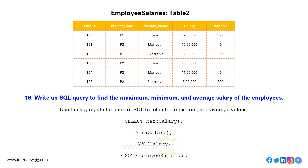Write an SQL query to find the maximum, minimum, and average salary of employees. Use the aggregate functions of SQL to fetch the MAX, MIN, and AVG values. SELECT MAX(salary), MIN(salary), AVG(salary) FROM employee_salaries.